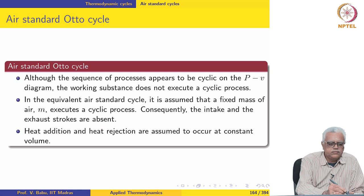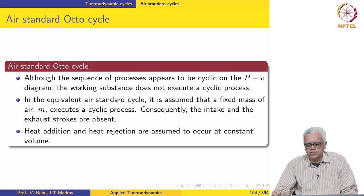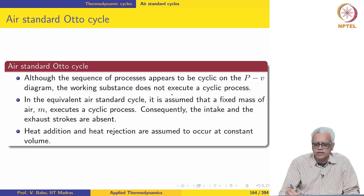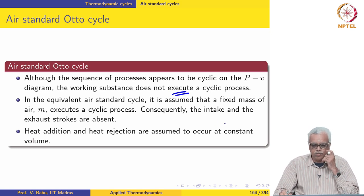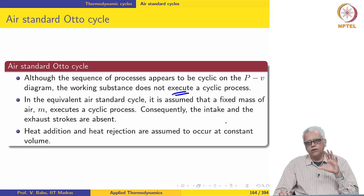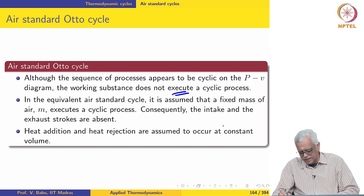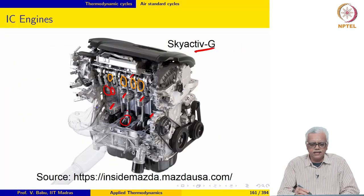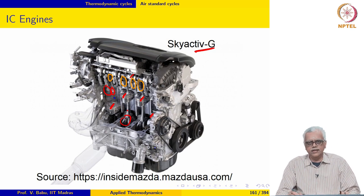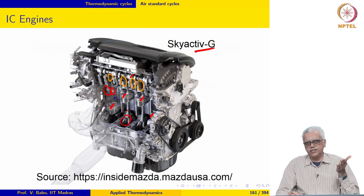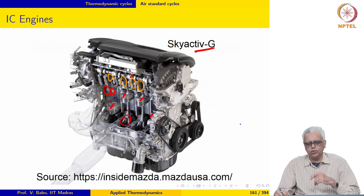Although the sequence of processes appears cyclic on the P-V diagram, the working substance does not execute a cyclic process. That is very important to keep in mind. In the equivalent air standard Otto cycle, we assume that there is a fixed mass of air in each cylinder.